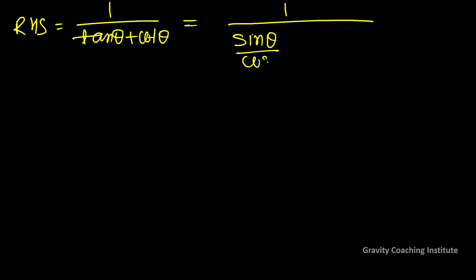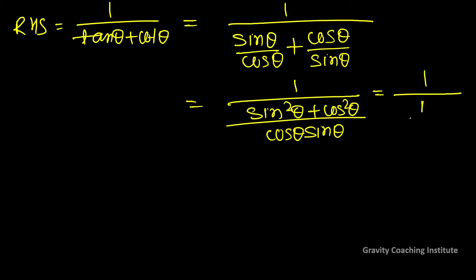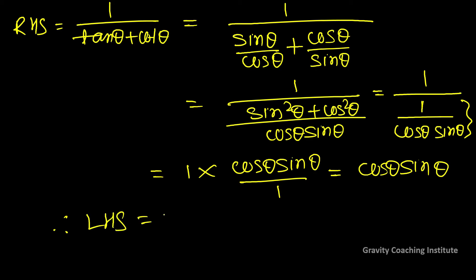Now for the RHS: 1/(tan θ + cot θ) = 1/(sin θ/cos θ + cos θ/sin θ). Simplifying, this equals cos θ·sin θ/1, which equals cos θ·sin θ. Therefore LHS equals RHS, both equal cos θ·sin θ. Hence proved.